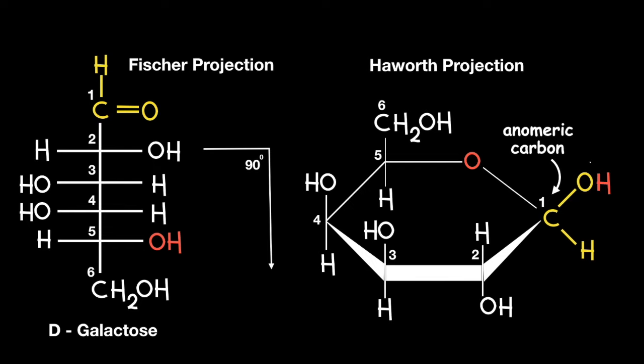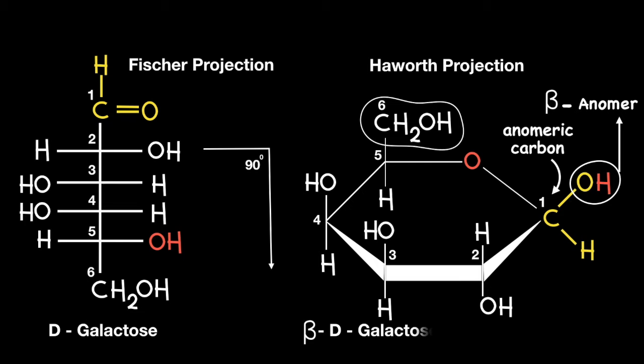If however the OH was pointing up and therefore on the same side of the ring as the CH2OH — the key words here being 'same side' — it would be classified as the beta anomer and it would be labelled beta-D-galactose. Using the relative positions of these two groups and whether they are on the same or opposite side of the ring allows you to correctly label both D and L isomers of monosaccharides.